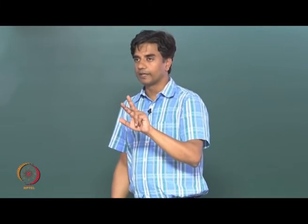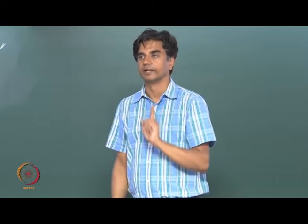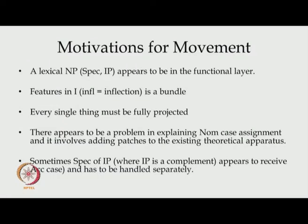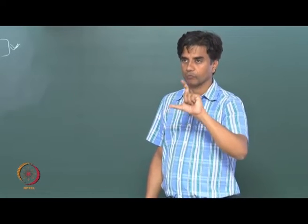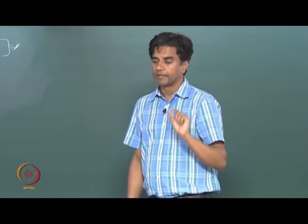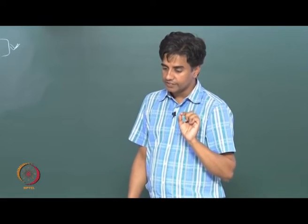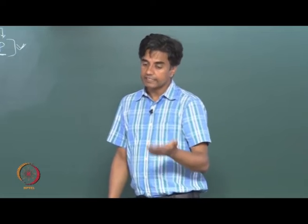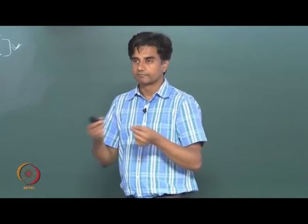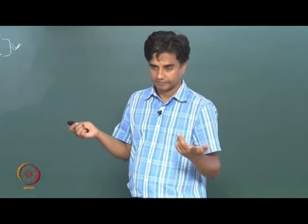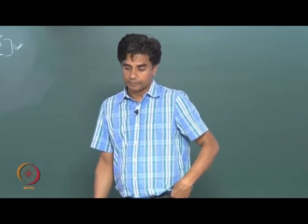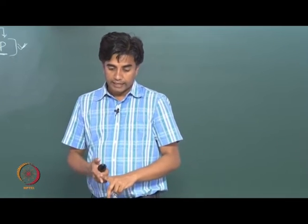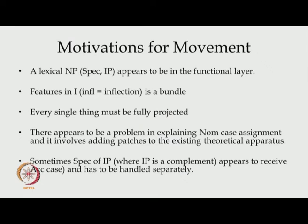It sounds a little complicated, a little tricky, but there is a rationale behind it. Some of the motivations for movement are: first, a lexical NP appears to be in the functional layer; second, features in I are a bundle. We need to take care of these two things. Every single thing must be fully projected — AGR, TP, and ASP must be fully projected. Once we do that, there appears to be a problem explaining nominative case assignment, which involves adding patches to the existing theoretical apparatus.